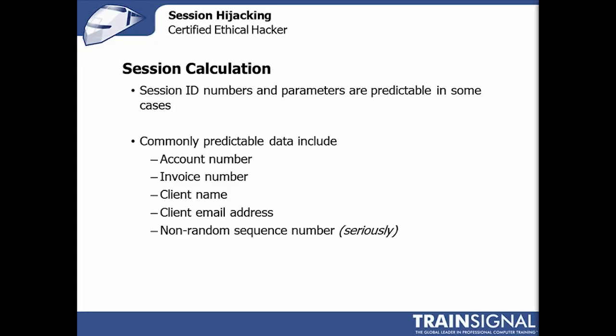Calculating session ID numbers and parameters — occasionally this is possible, but it's actually really, really hard to do. It requires some type of non-random sequence number, which is one of those vulnerabilities in operating systems or services that gets immediately patched, or some type of other predictable data. This idea of session calculation is feasible, it's just not very practical. It's not one of the first attacks I would mount against a client — it's actually not one I would do almost ever, because unless there's a major vulnerability, it's not likely to succeed.